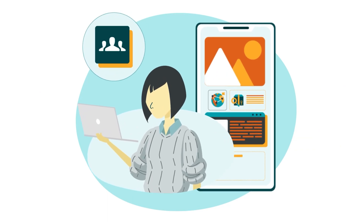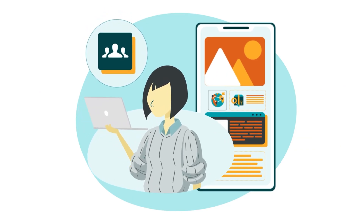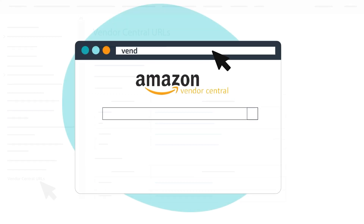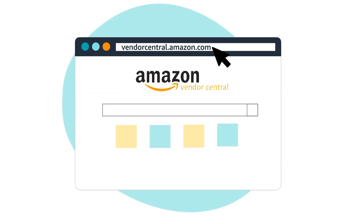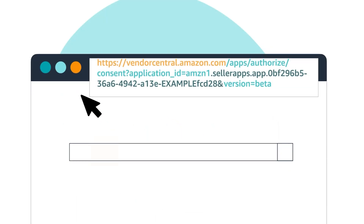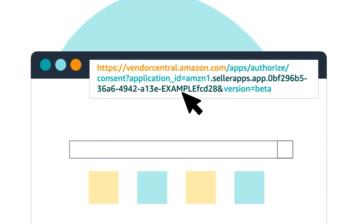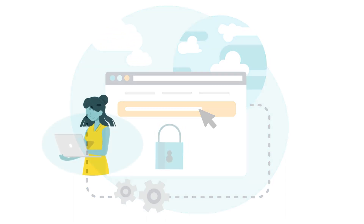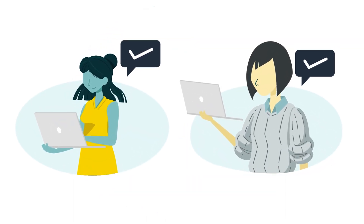To construct an OAuth Authorization URI for a public vendor application, follow these same steps but get a Vendor Central URL instead. For example, use vendorcentral.amazon.com to construct https://vendorcentral.amazon.com/apps/authorize/consent, your application ID, and then version=beta. Make sure you construct OAuth Authorization URIs for the stores in which the seller or vendor will authorize your application.